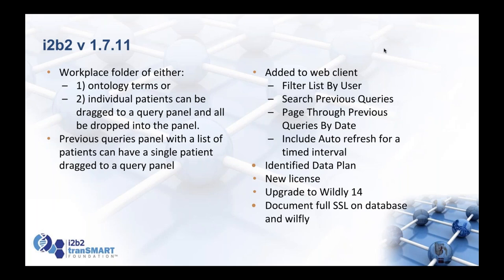Nitsch did a lot of work on the previous queries feature: he enabled the ability to filter by users, do paging back and forth, auto-refresh at timed intervals, and the ability to search previous queries. Another new feature we added was the identity data plan. This allows ontologies to be seen only by certain roles — for example, if you want to do searches by PHI information such as medical record numbers or first names, you could have an ontology with that type of information that only people with a data pro role can see. That will allow you to have identified data in i2b2 if you wish.